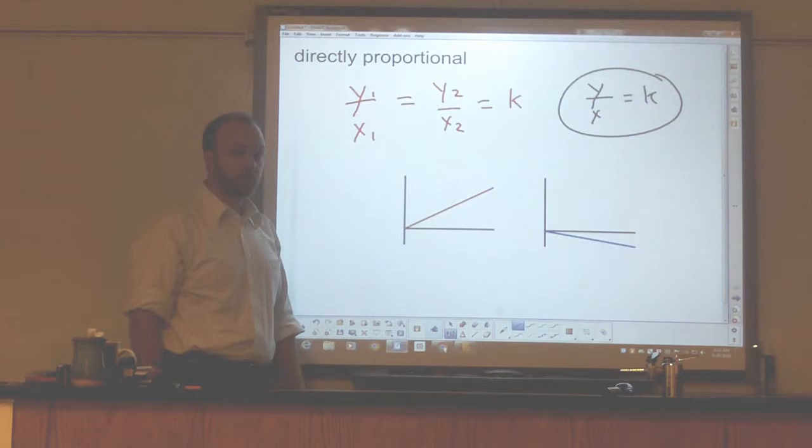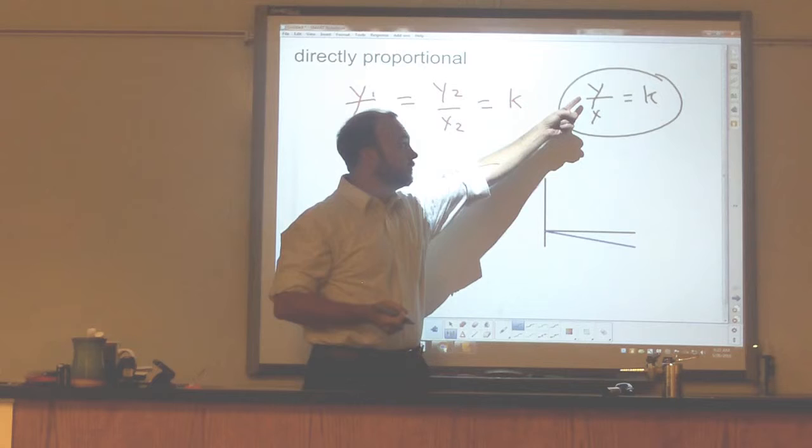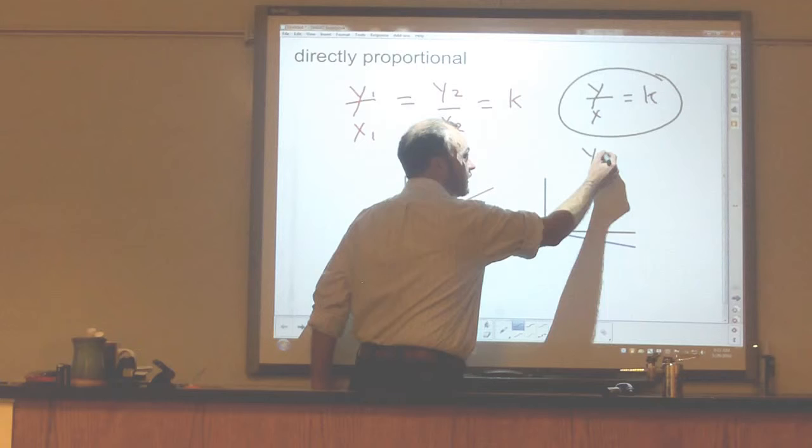Now, for a lot of you, it will be more helpful to rearrange that to solve for one value, to solve for y. That's the way you're used to seeing equations in your math class. It's really easy to rearrange this to solve for y. If we solve for y, we simply multiply both sides by x, and we end up with y equals kx.